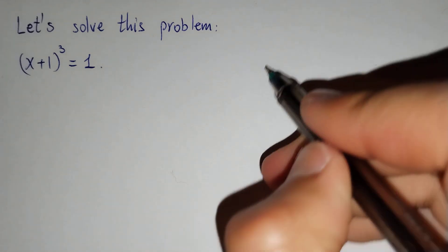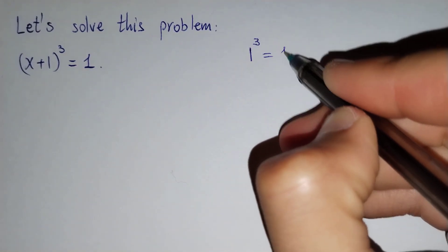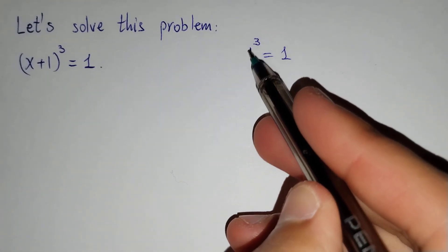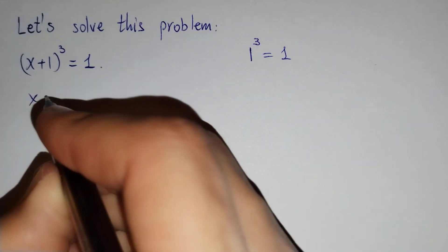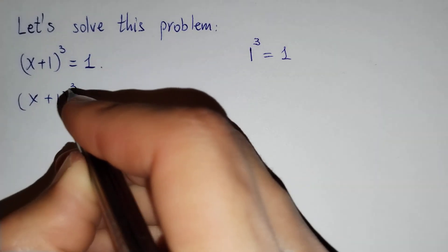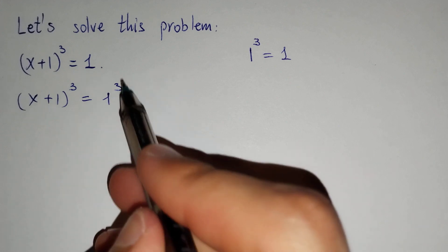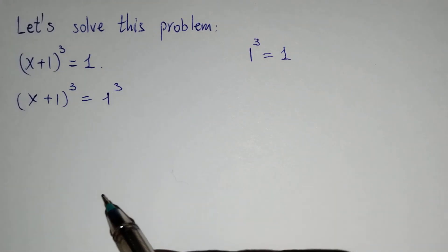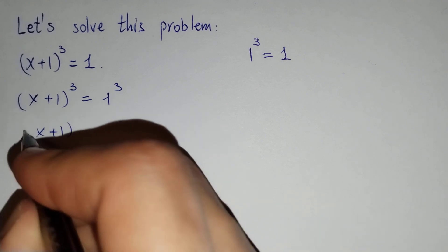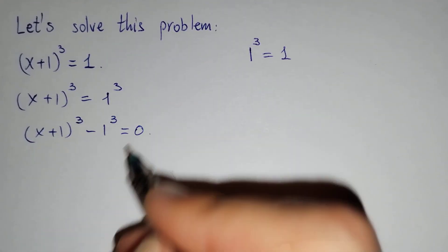Firstly, we know that 1³ equals 1, so we may write 1 as 1³. Then (x + 1)³ = 1³. And if we move 1³ to the other side of our equation, we get (x + 1)³ minus 1³ equals 0.